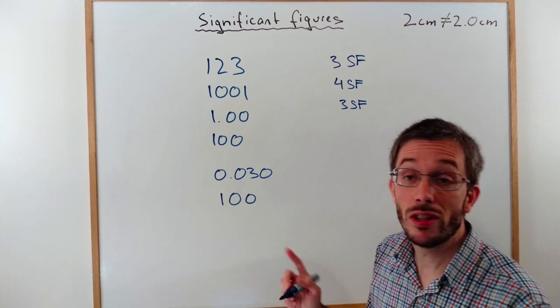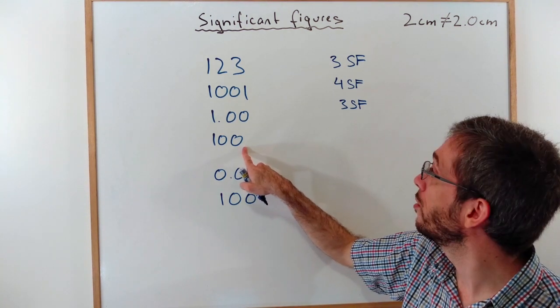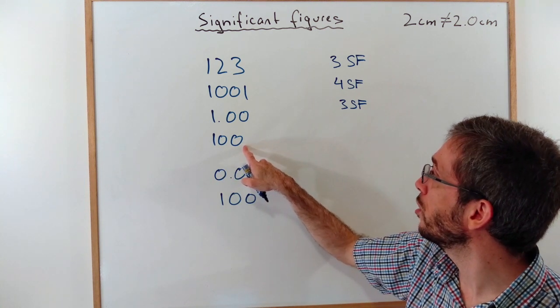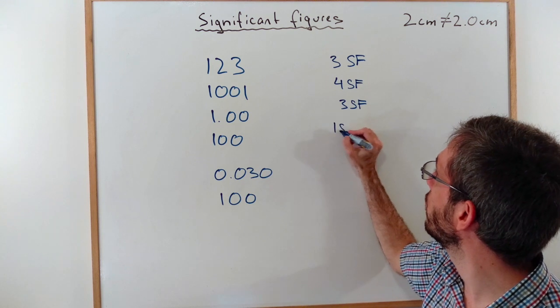They would not count if there is not a point on the right here. So if there is not a point on the right, they would not count. In this case, I have 100 with 1 significant figure.